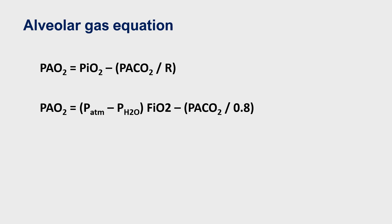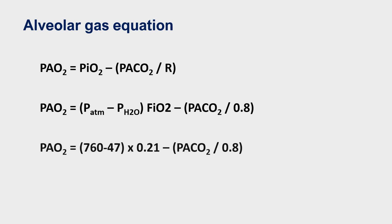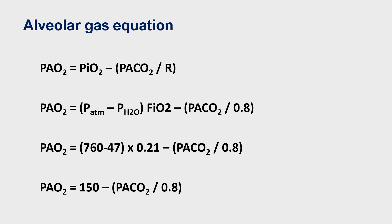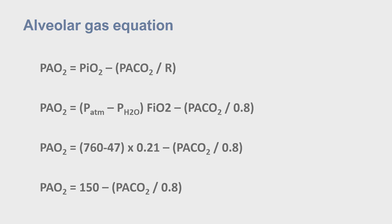Thus, substituting these values, we find that the partial pressure of alveolar oxygen is about 150 minus the partial pressure of alveolar carbon dioxide divided by the respiratory quotient of 0.8.